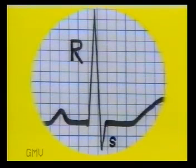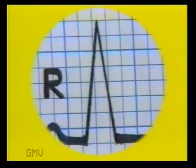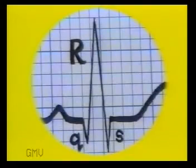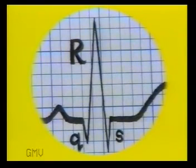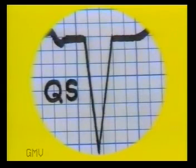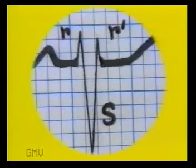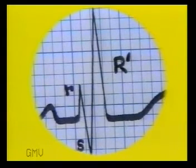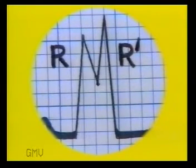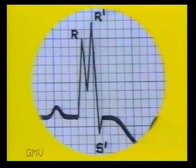You must have noted by now that prominent waves are written in capital letters and small waves in small letters. This is an R pattern with no Q wave and no S wave. In this complex, we see a small Q wave, a tall R wave and a small S wave — a QRS complex. And in this complex, there is only a downward deflection with no R wave; we do not know whether it is a Q wave or an S wave, so it is termed as a QS complex. This is an RSR dash with a deep S wave. This is an RSR dash with a tall R dash wave. This is an RR dash pattern, and this is an RR dash S dash pattern.